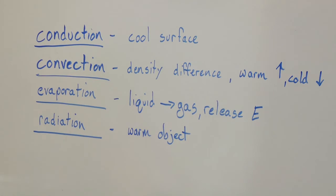The second type of heat loss is convection. This occurs with density differences. Warm air is less dense and rises, while cold air is more dense and settles down. When you have convection, you start to form currents. A common example is a convection oven.